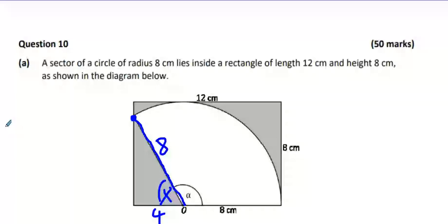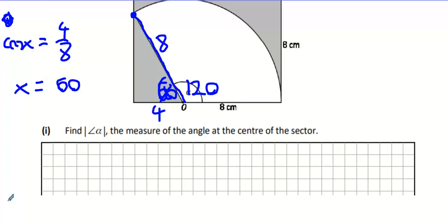Again, I'm going to do x. And then I'm going to say cos x is 4 over 8. Cos inverse 4 over 8, you get 60. If that's 60, that one there has to be 120. The ends.